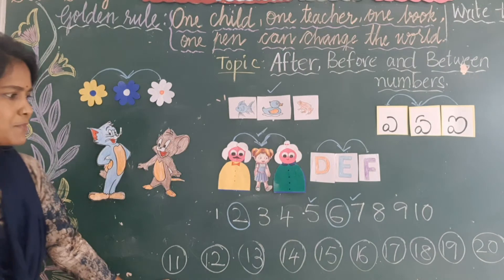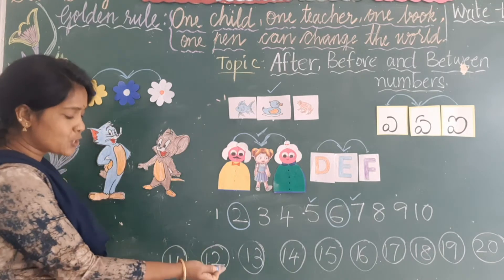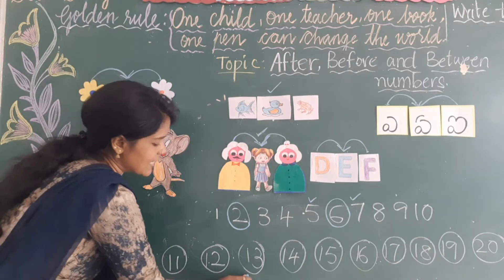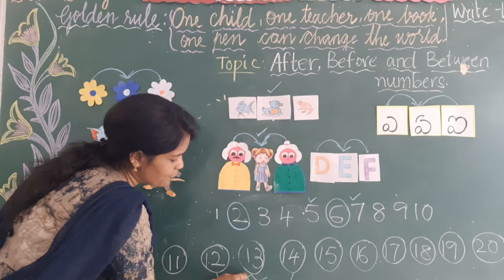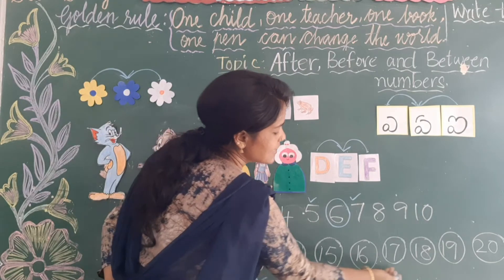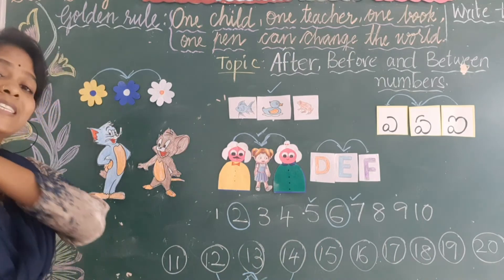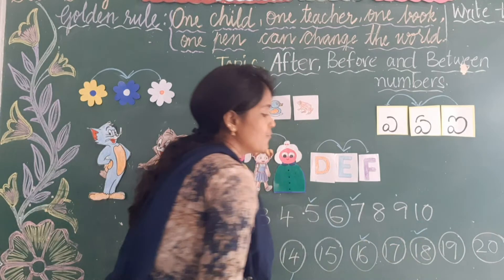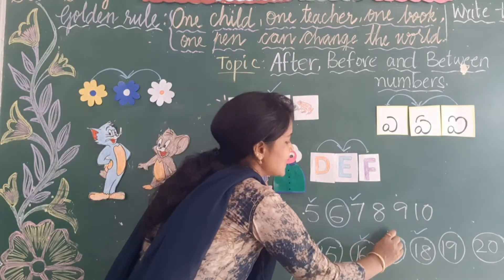Now here you can see numbers from 11 to 20. Which number is there in between 12 and 14? Yes, there is 13 — in between 12 and 14 there is number 13. Now look at 16, 17, 18 — which number is there in between 16 and 18? In between 16 and 18, yes, there is 17.